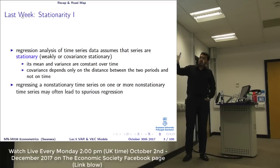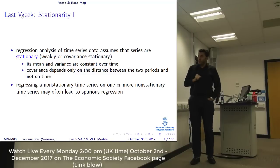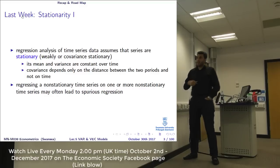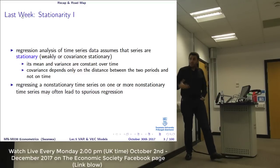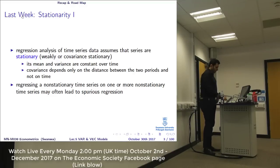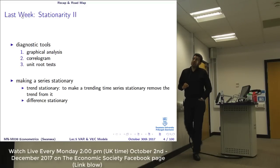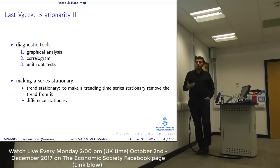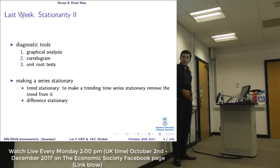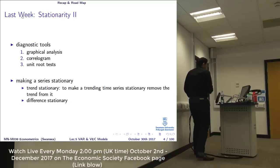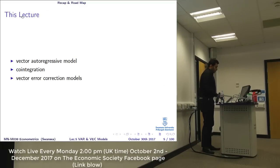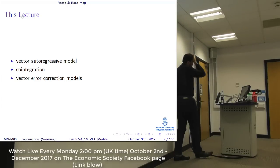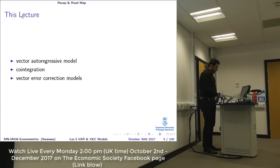The second part of the lecture discussed stationarity: what it means, what happens when we regress non-stationary data, how to test for stationarity, and what to do if you want to make a series stationary, whether it is trend stationary or difference stationary. Today we will look at vector autoregressive models and then move to the vector error correction model.